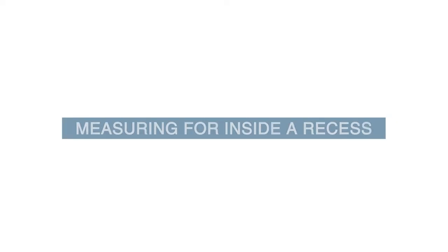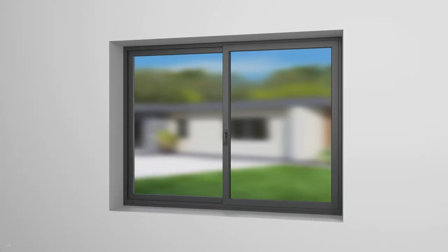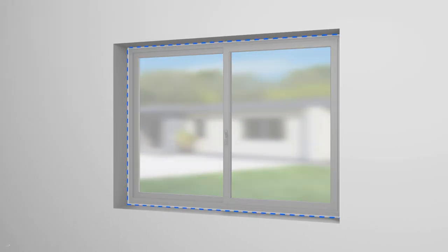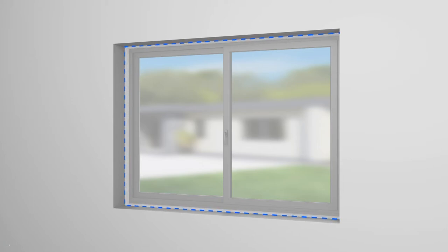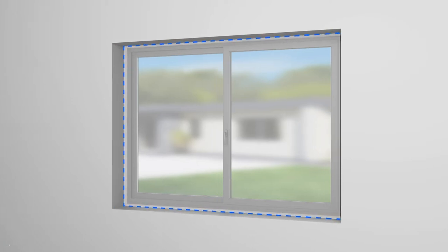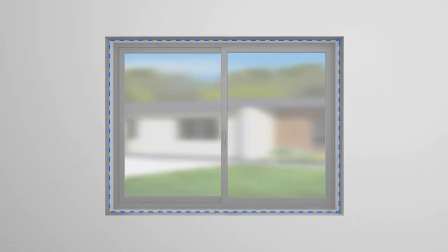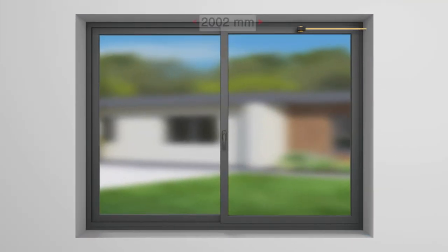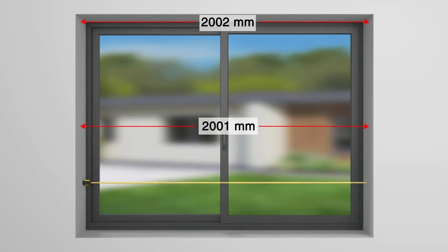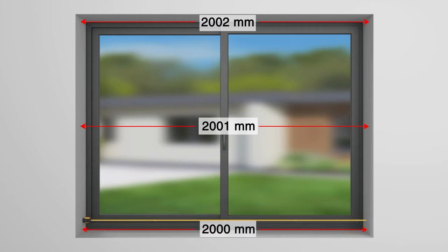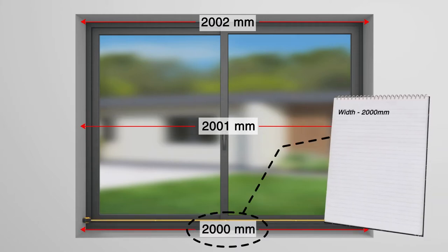Let's see how to measure for fitting a blind inside your window recess. While taking the measurements, ensure you leave enough room in front of any obstructions like the window handles, and that there is enough space for the blind to fit into the recess. Once you've found the sweet spot, measure the width from wall to wall at the top, middle and bottom. Note the narrowest of the three measurements.